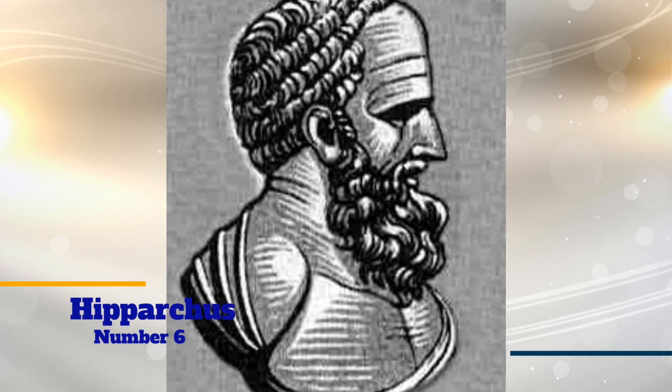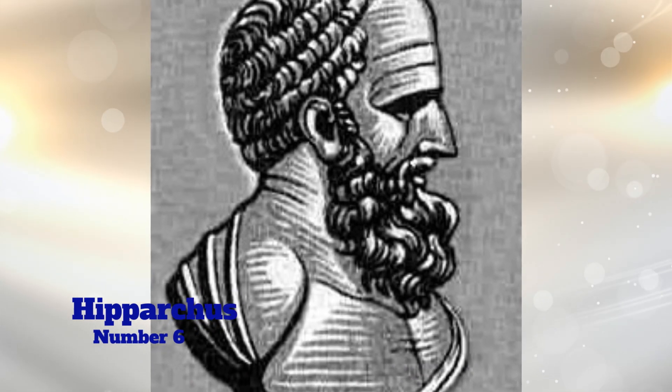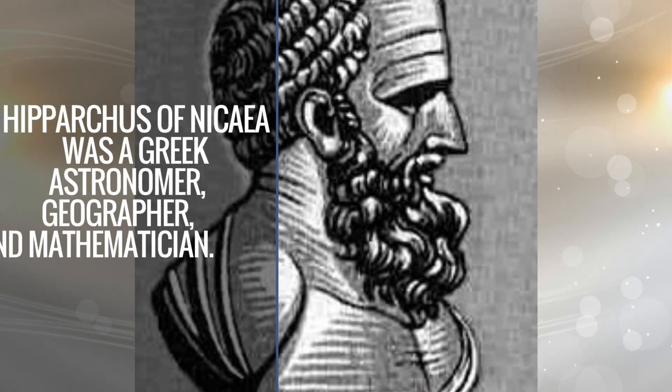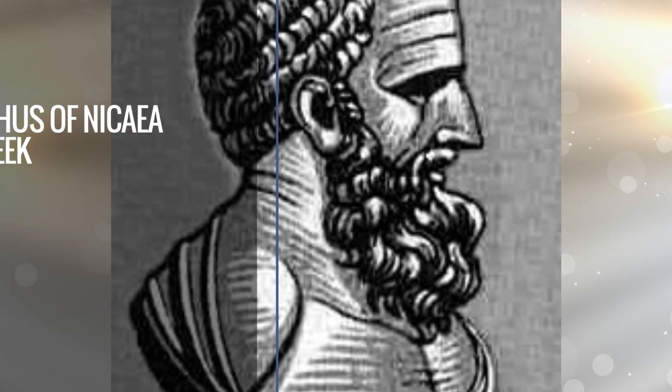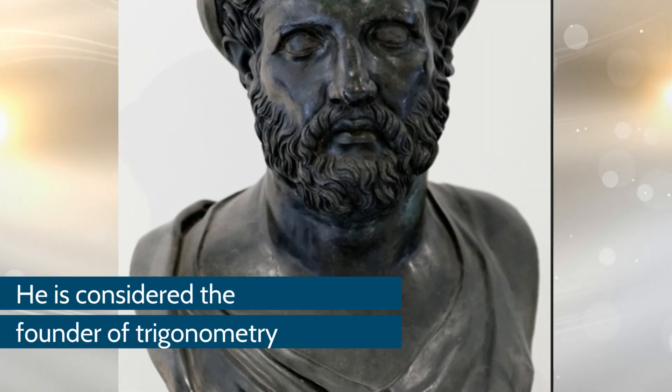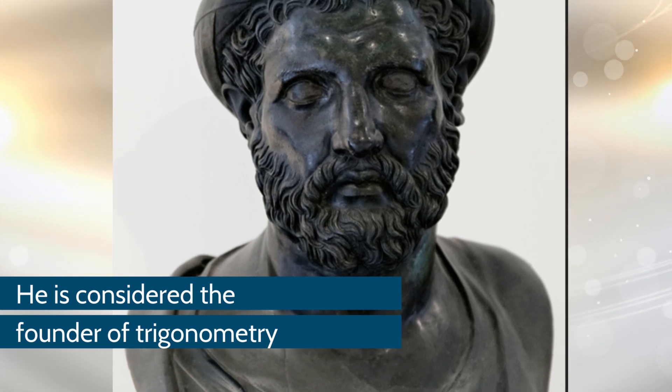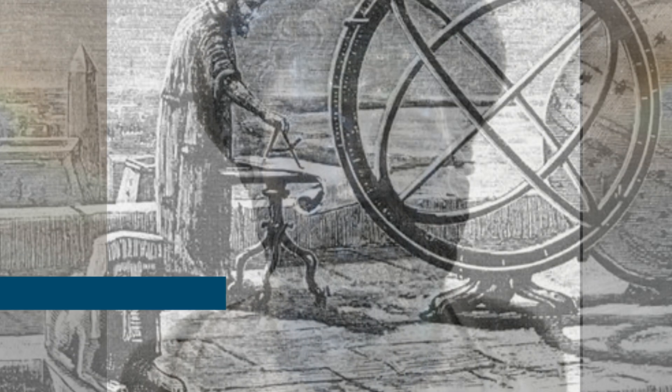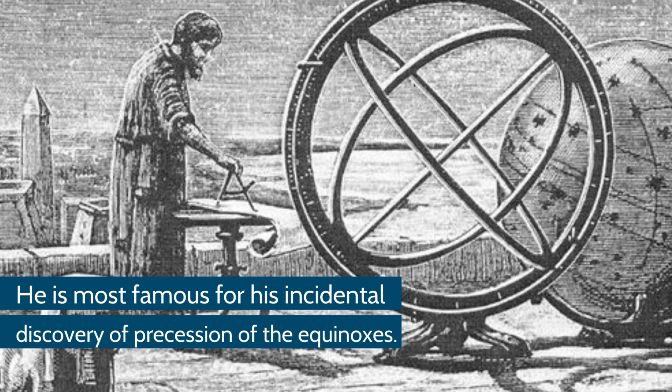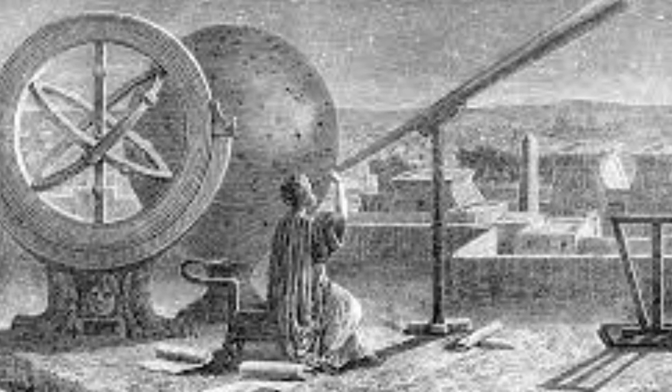Number 6: Hipparchus. Hipparchus of Nicaea was a Greek astronomer, geographer, and mathematician. He is considered the founder of trigonometry, but is most famous for his incidental discovery of the precession of the equinoxes. Hipparchus is considered the greatest overall astronomer of antiquity. He was the first whose quantitative and accurate models for the motion of the sun and the moon survived, and he developed trigonometry and constructed trigonometric tables.